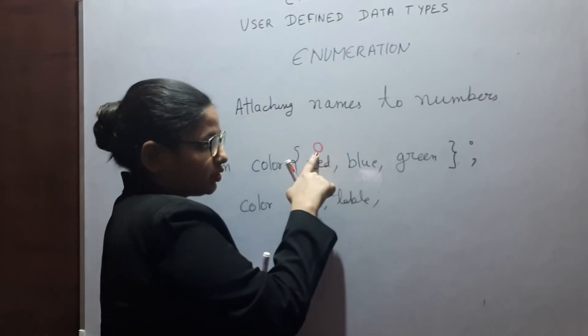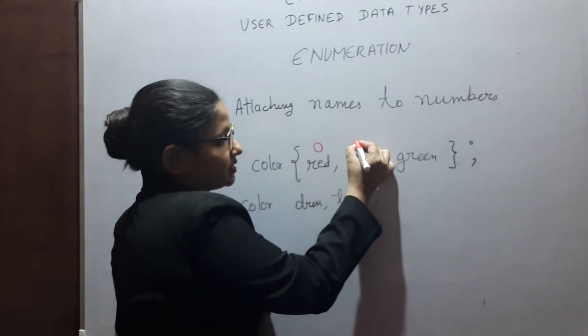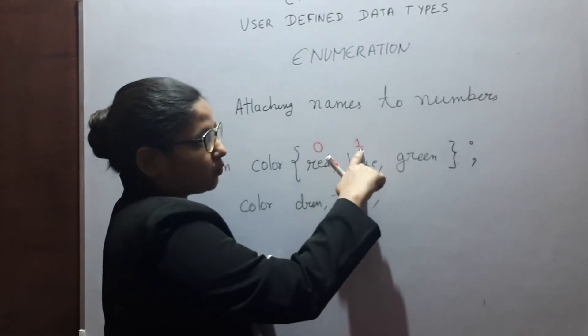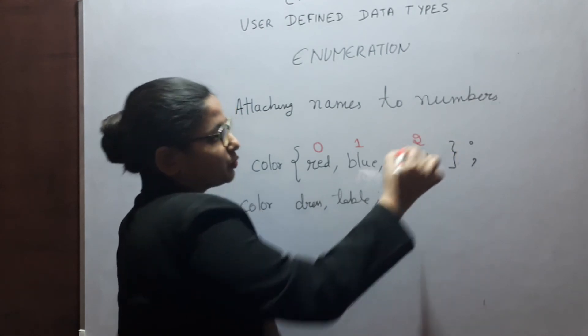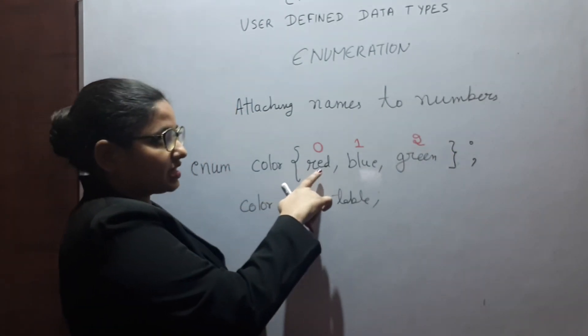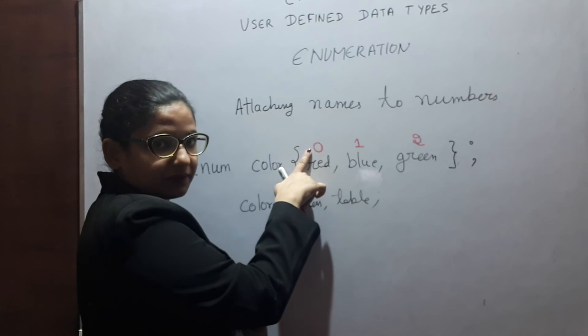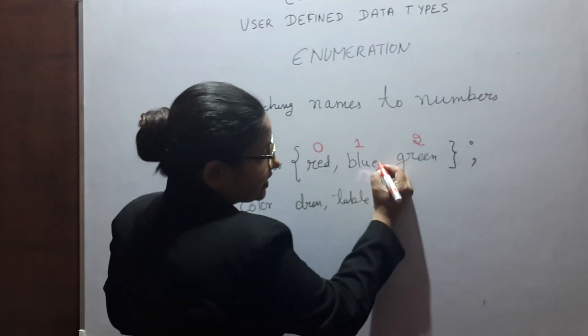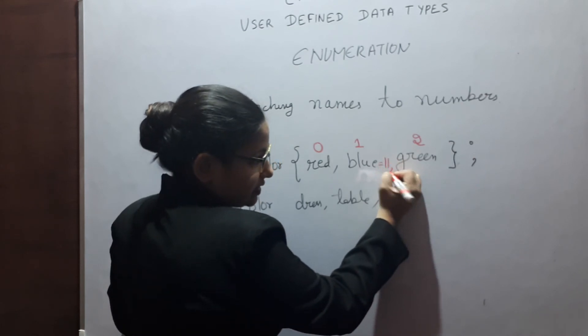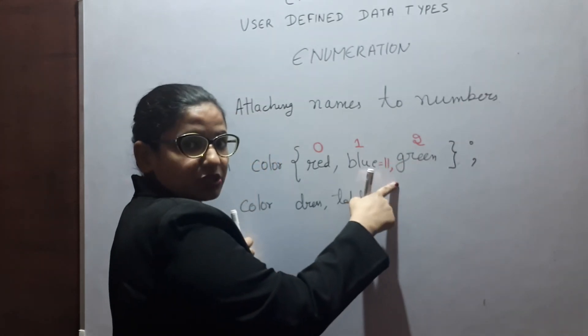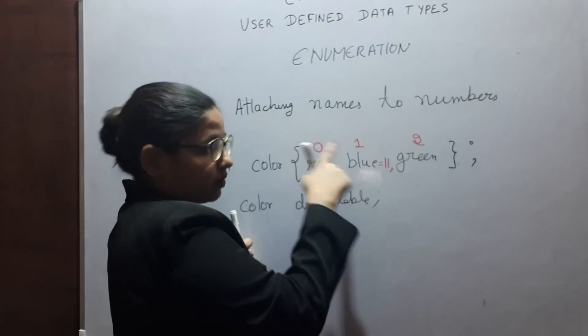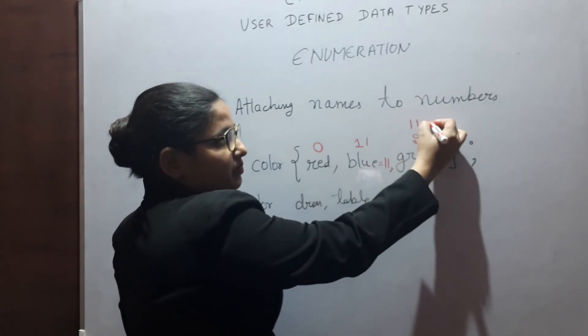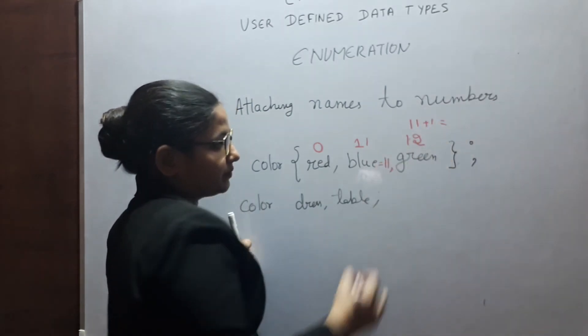Next, blue will be having zero plus one, so blue value is one. Green will be having value one plus one, that is two. You are attaching names to numbers. Suppose, if I make this statement like blue equals to eleven, red will become zero, blue will become eleven, and green will become eleven plus one equals to twelve.